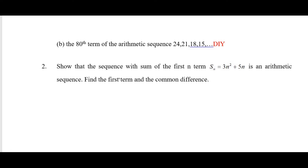Now let me show you the answer for number 2. The question asks to show that the sequence with sum of the first n terms Sn = 3n² + 5n is an arithmetic sequence, and then find the first term and the common difference. The first task is showing that this is an arithmetic sequence.